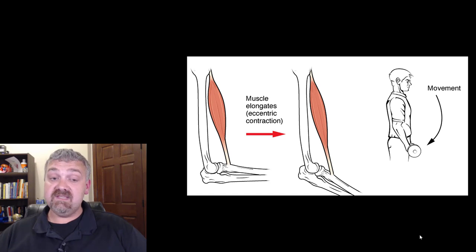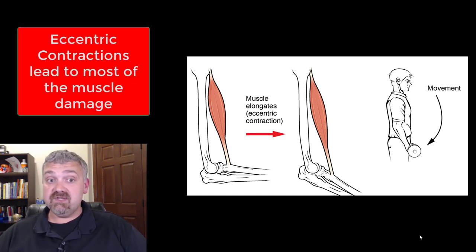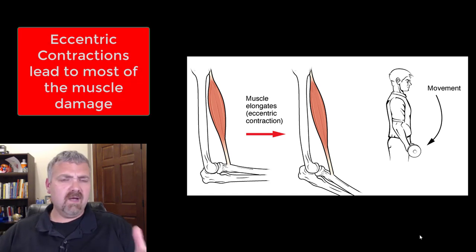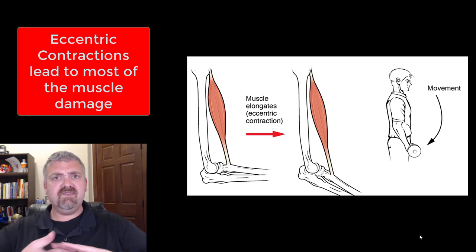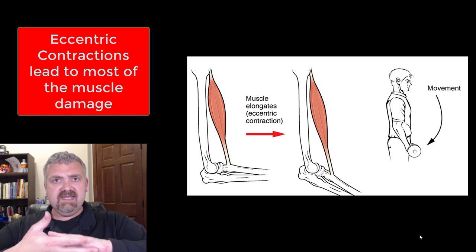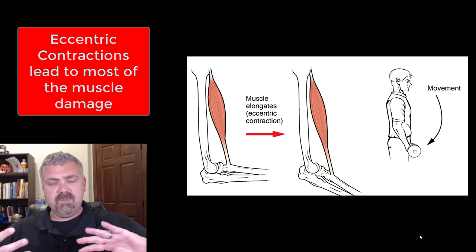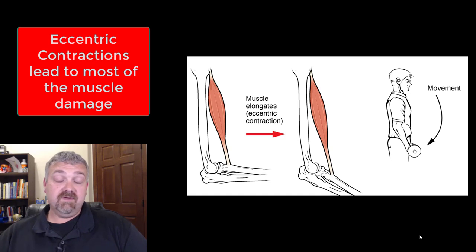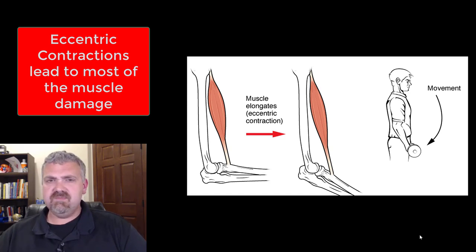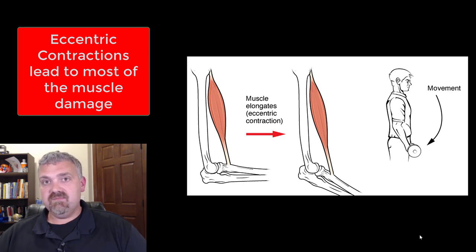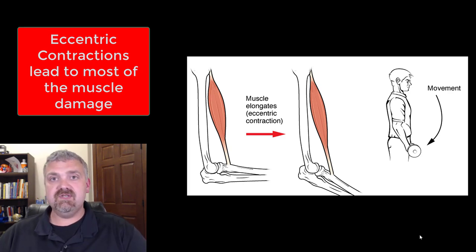The reason you do that is because eccentric muscle contractions are where most of the muscle damage comes from. That makes sense — the muscles, while they're contracting, are being pulled apart. Every so often you might want to do this, but this could lead to a lot of muscle damage. But if you're trying to get bigger, stronger, and more explosive, muscle damage and the repair from that damage is actually what you need.